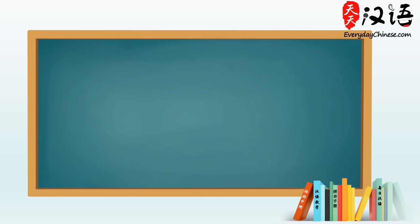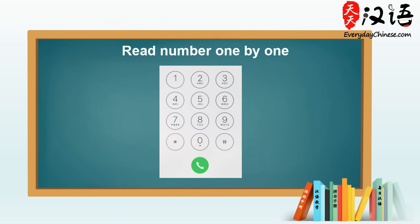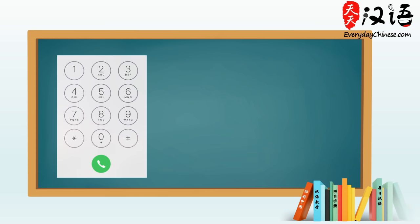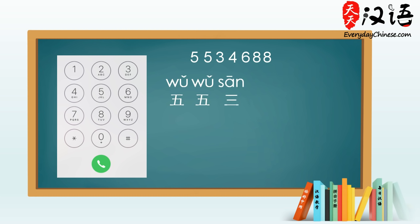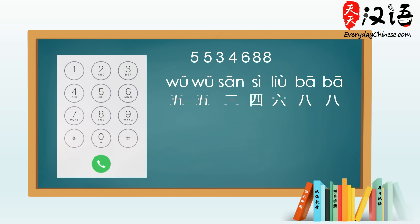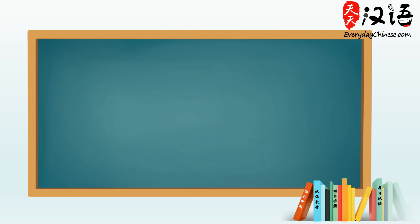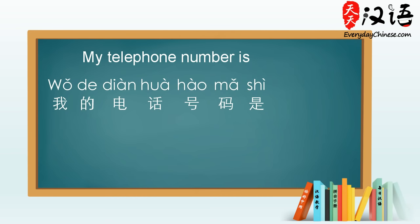To say a phone number, we only need to read out each number in Chinese. For example, if a phone number is 5534688, how would you say this in Chinese? 五五三四六八八. Have a listen: 五五三四六八八. You can answer by saying: my telephone number is — 我的电话号码是 — 五五三四六八八.